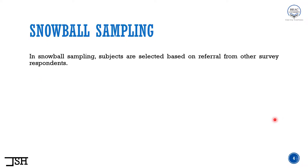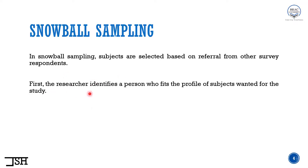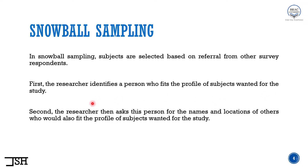So now for the definition: in snowball sampling, subjects are selected based on referral from other survey respondents. I gather references for further respondents from earlier respondents. To summarize: first, the researcher identifies a person who fits the profile of subjects wanted for the study. Then the researcher asks this person for the names and locations of others who would also fit the profile of subjects needed for the study.